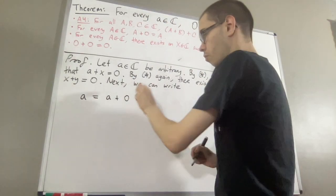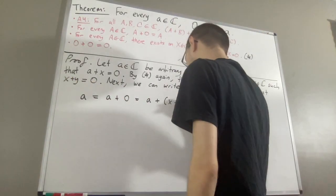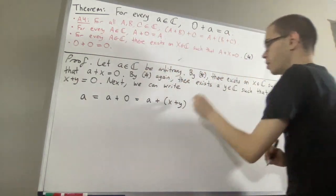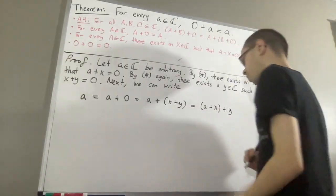But then, we're going to replace this 0 with x plus y. So then, if we apply the associative law of addition, we can move these parentheses around a plus x. So we get this.